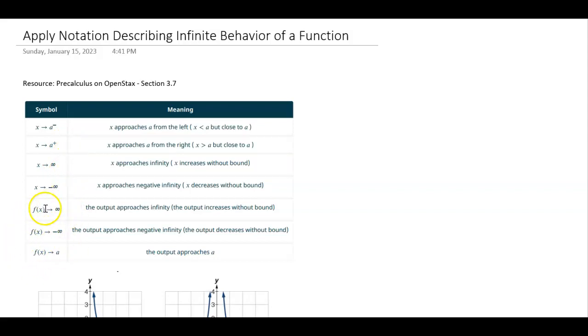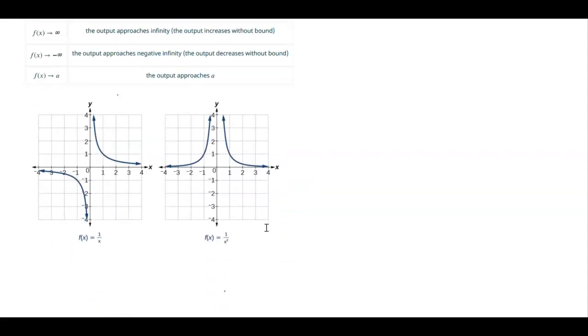Where down here, we're looking at outputs. So if f of x goes to infinity, then we say the output goes to infinity, negative infinity, or to an exact number. Here are two parent functions. We have the reciprocal parent function, and then we also have 1 over x squared.